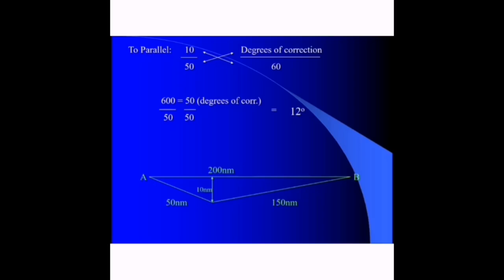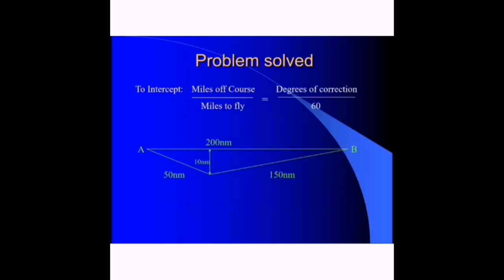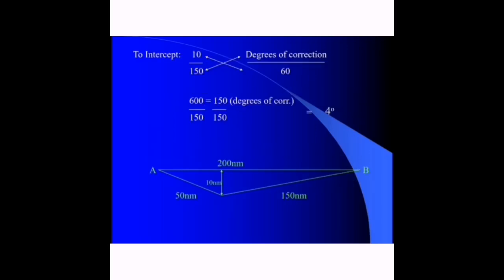You've got back to your track, but now you want to fly to point Bravo. We determine the correction angle or degrees to intercept the track. Miles off course over miles to fly equals degrees of correction over 60. 10 nautical miles over 150 nautical miles equals degrees of correction over 60. When we cross multiply, we get a correction angle of 4 degrees.